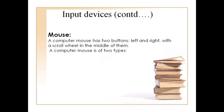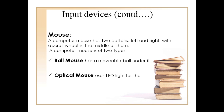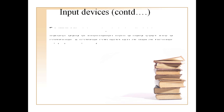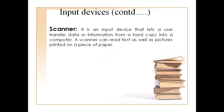The next input device is the mouse. It is also known as a pointing device. It controls the movement of the pointer on the monitor. It has two buttons — left and right — and a scroll wheel in the middle. A computer mouse can be divided into two types: first, a ball mouse, which uses a ball for the movement of the mouse pointer, present under it; second, an optical mouse, which uses an LED light for the movement of the mouse pointer.